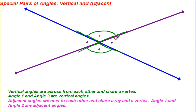Angle 2 and angle 4 are also vertical angles. They share only a vertex. Vertical angles are congruent. That means they have the same measure.